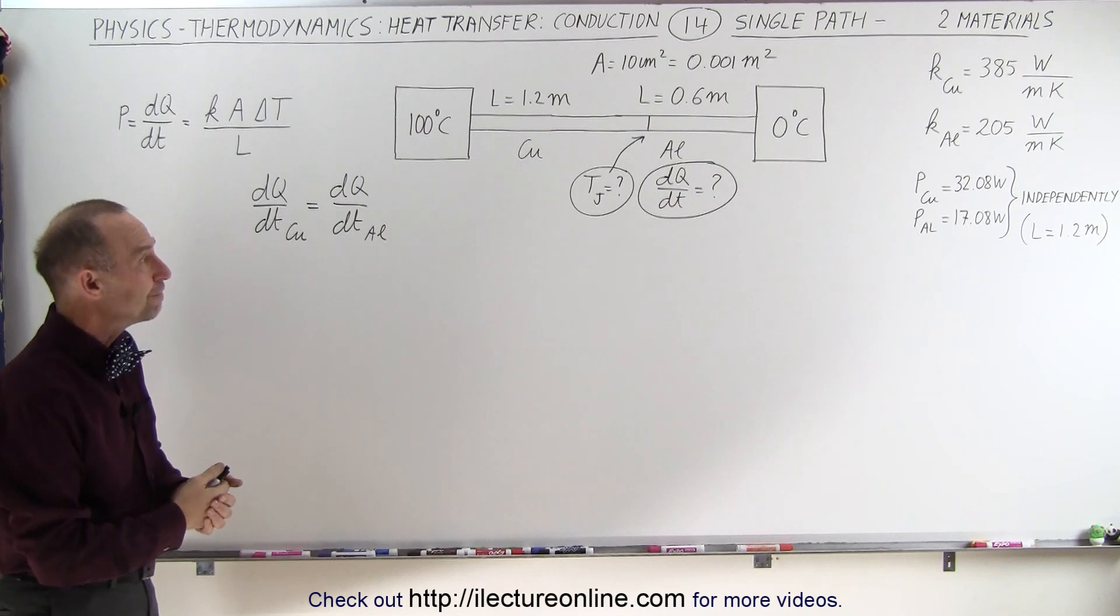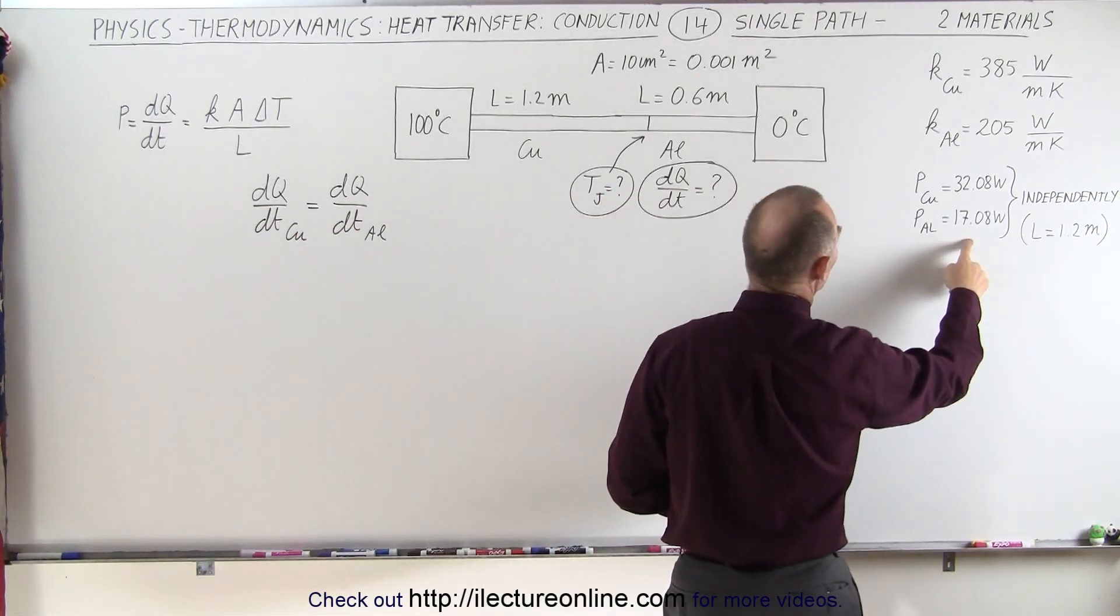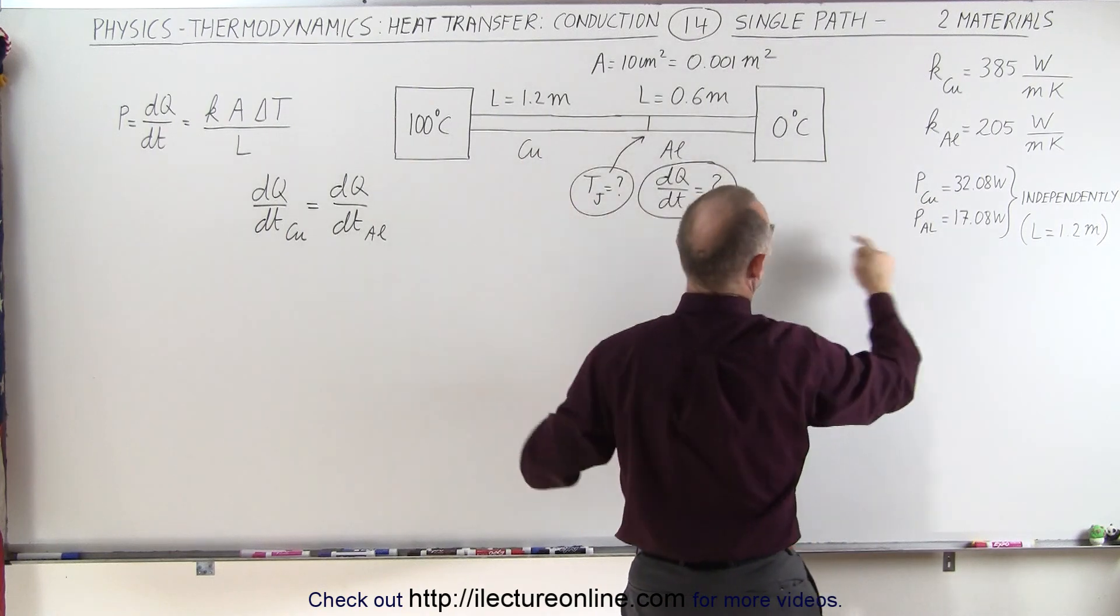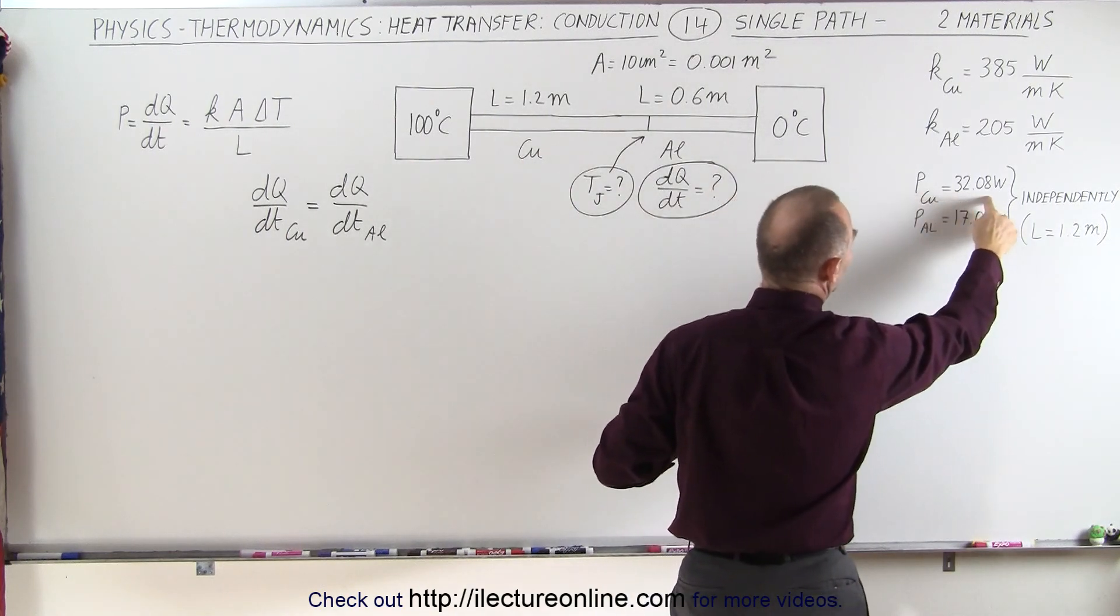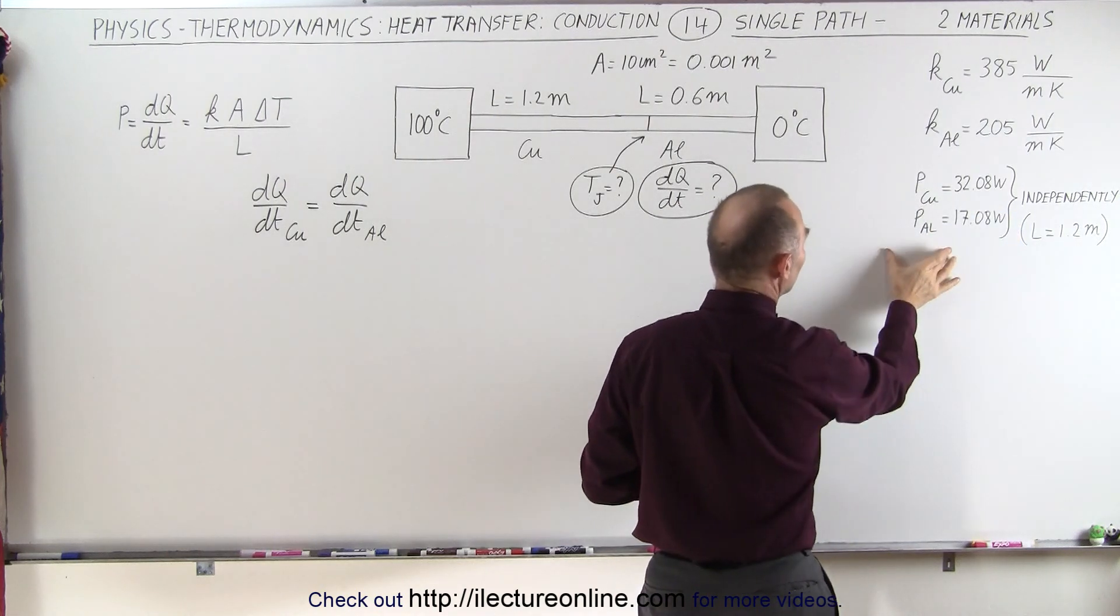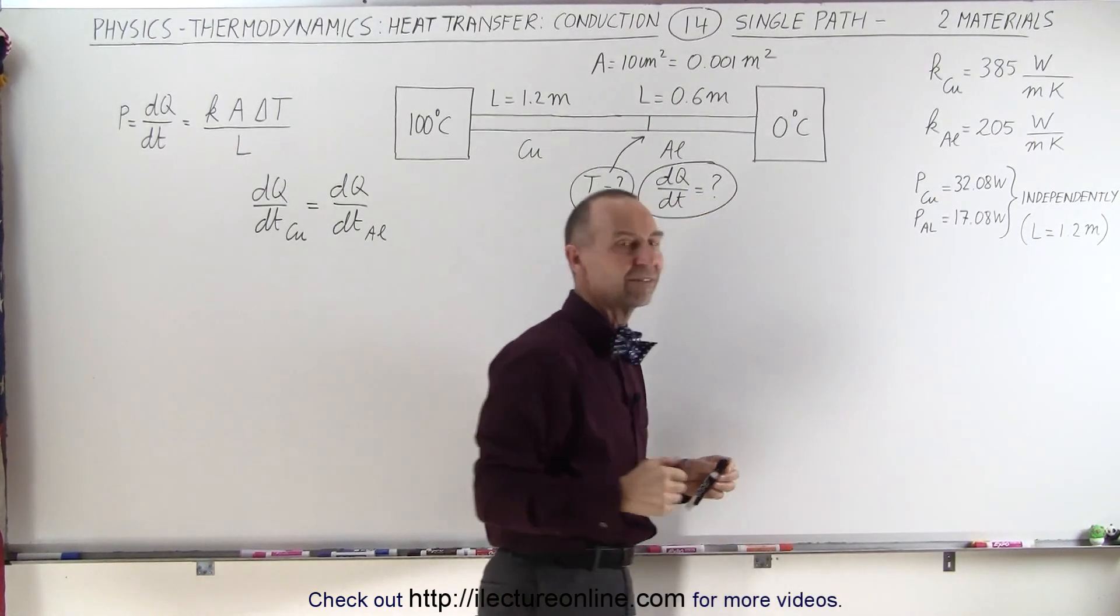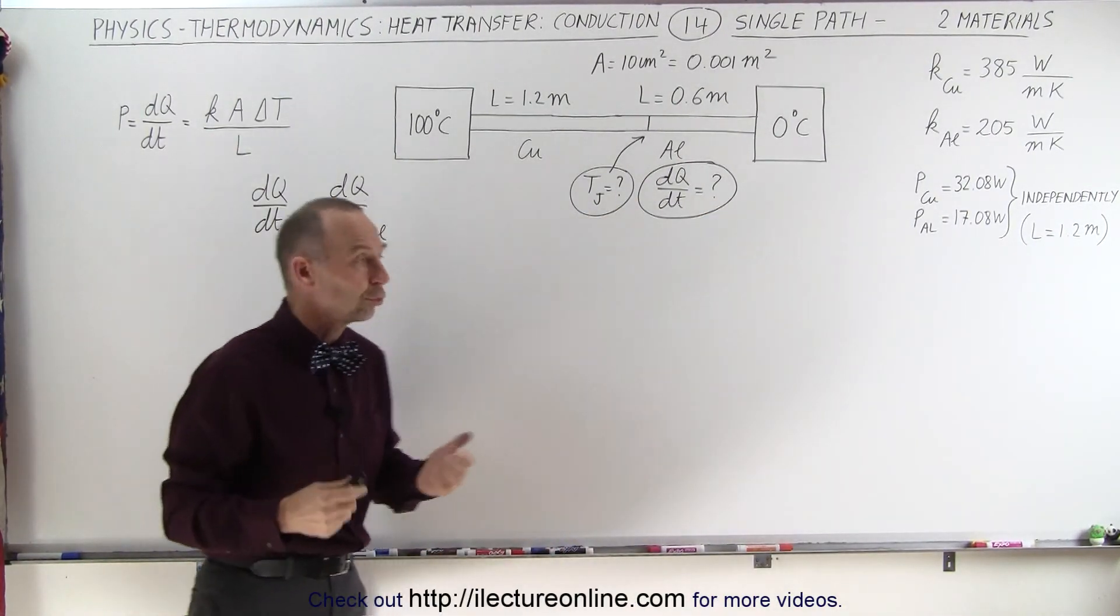The cross-sectional area is still the same and notice we still have the information from the previous videos where we had a 1.2 meter section of copper alone carrying heat at 32.08 watts and if it was aluminum alone at a 1.2 meter section it would carry heat at 17.08 watts or joules per second.